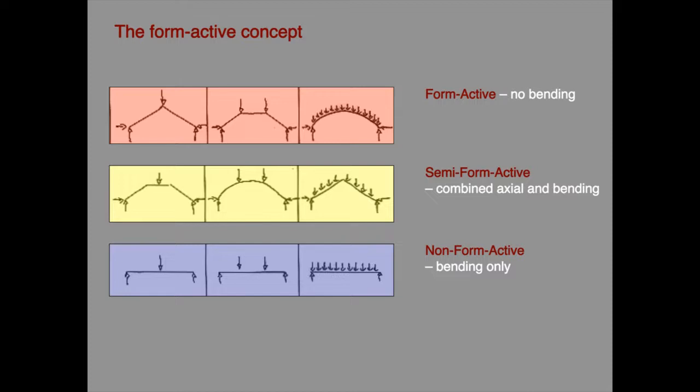This concept of form active, semi-form active, and non-form active is extremely useful because it allows the potential efficiency of a structure to be judged purely from an inspection of its overall form. Given that axial is efficient and bending is inefficient, structures that are form active will be efficient, those that are non-form active will be inefficient, and semi-form active structures will achieve a moderate level of efficiency depending on how close their shape is to that of the form active shape for the loads concerned.